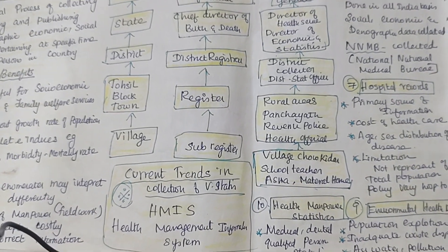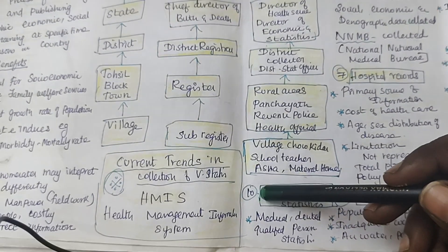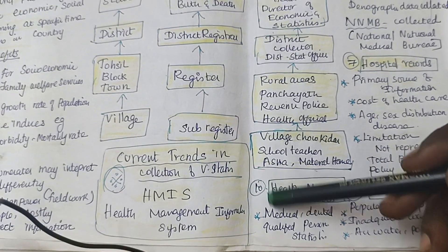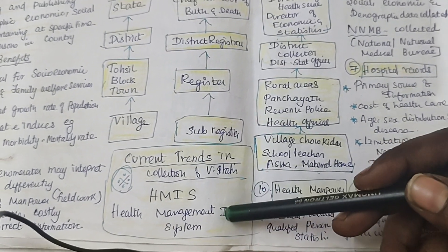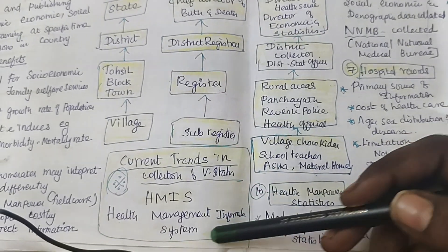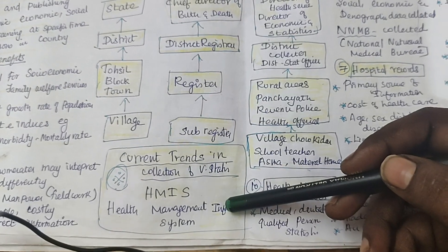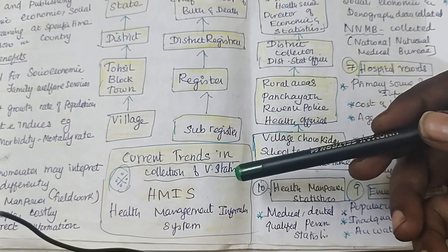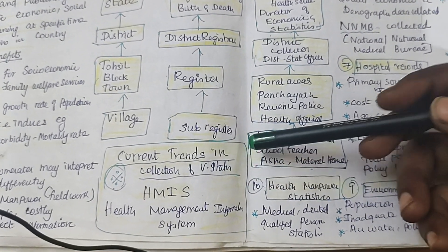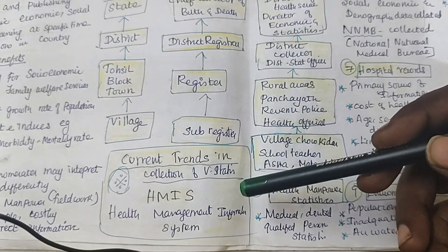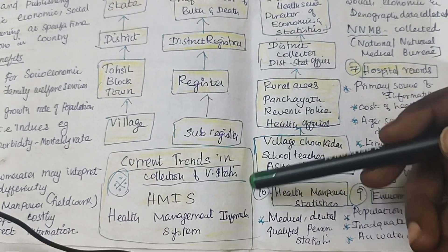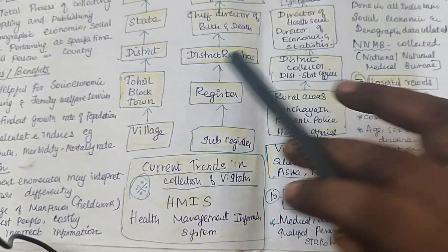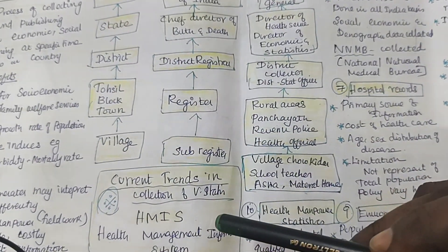The modern data system is called HMIS — Health Management Information System. Now, in the computer and AI era, HMIS is very much currently helpful to take vital events from the primary healthcare center. Every day they report the data — computer staff are working and reporting every day. The data is processed every month and the Ministry of Health record is maintained. All these data are helpful to diagnose the community.